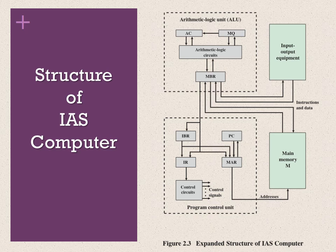The MAR (Memory Address Register) specifies the address in memory of the word to be written or read into the MBR — essentially a pointer to memory. The IR (Instruction Register) contains the 8-bit opcode of the current instruction to be executed by the control unit. IBR (Instruction Buffer Register) is employed as a temporary hold for the right-hand instruction from a word in memory. PC (Program Counter) is a pointer to keep track of where we are in program execution — it contains the address of the next instruction pair to be fetched from memory.